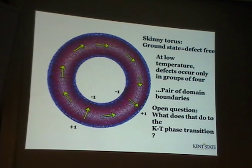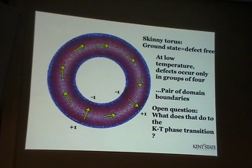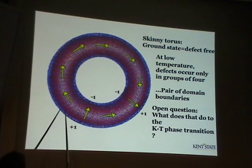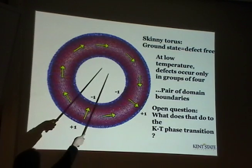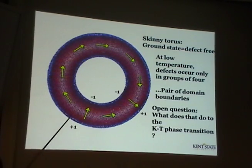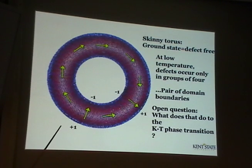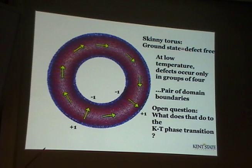On a skinny torus, the clockwise and counterclockwise domains mean you need at least two boundaries, so the minimum number of topological defects is four. The total number that arises is a multiple of four. That might actually change the nature of the Kosterlitz-Thouless phase transition. If the torus is fat, even the ground state might still have topological defects — it might be impossible to get rid of them entirely.